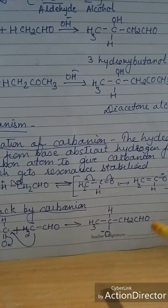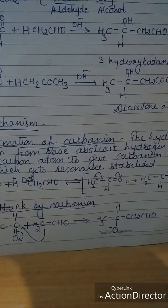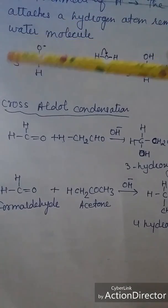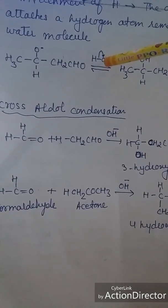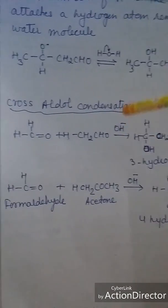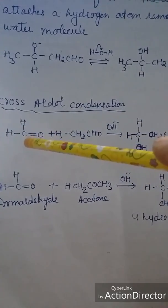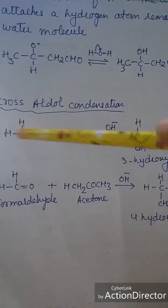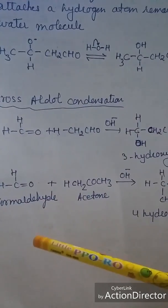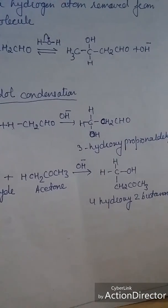Third, proton abstraction from water occurs, and this intermediate extracts a proton from water, resulting in the formation of aldol. Aldol condensation can also be a cross condensation. For example, formaldehyde (HCHO) and acetaldehyde (CH3CHO) both react to form an aldol product. Or formaldehyde reacting with acetone results in the formation of an aldehyde product. So cross aldol condensation is also possible.